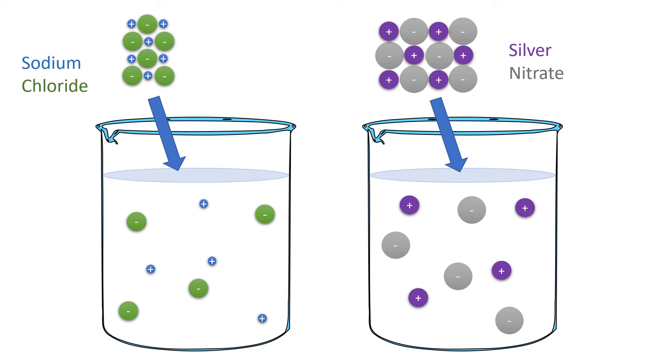So again, there are no silver nitrate particles in the water. There are just independent silver ions and nitrate ions.